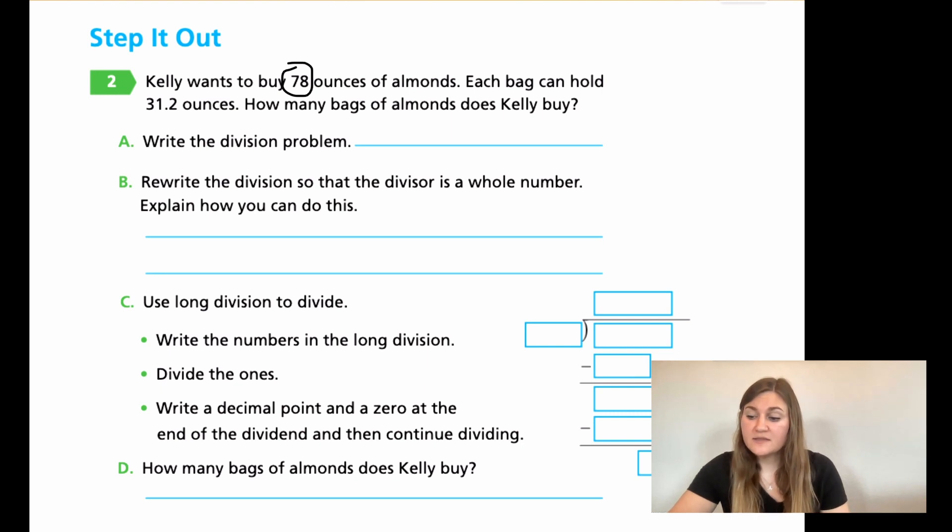Then for B, can you rewrite the division problem so the divisor, the number you're dividing by, is a whole number. Remember how in the last couple of lessons we were multiplying it. Make sure that you multiply both the dividend and the divisor equally by a number so that you end with your divisor being a whole number. And then for C, go ahead and write in your problem and divide until you find out the final answer. Remember, you are going to be having to put a zero at the end of your dividend because that's what we're practicing for this lesson until you end your problem with a zero. And then D, go ahead and find out your final answer. Go ahead and try your best on these couple of problems and then come back and we will solve them together. Go ahead and hit pause here.